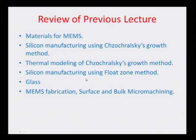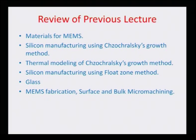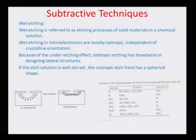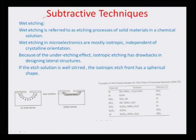We referred to a different model of silicon manufacturing using the float zone method. We also talked about glass, another very important material for MEMS. Then we started with some MEMS fabrication strategies, particularly surface and bulk micromachining. Surface micromachining is an additive process where thin film layers can be deposited on the surface, while bulk micromachining is a subtractive process where material is removed from the volume of the wafer. Now let us look at some alternate MEMS fabrication processes, specifically etching.